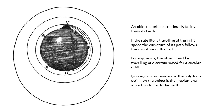The bigger the radius, the smaller the speed required, as we shall see. For a particular radius there is only one possible speed for a circular orbit. Ignoring air resistance, the only force acting on the satellite is the gravitational attraction of the Earth, and that is the centripetal force that keeps it going round in a circle.